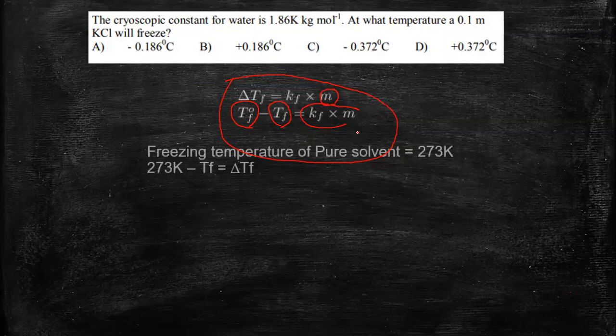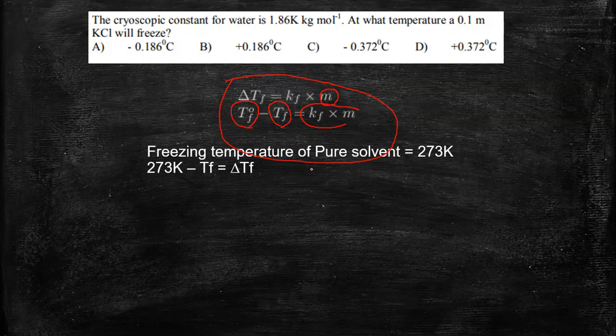Now let's continue. We know the freezing temperature of the pure solvent. Considering it as water, we know the pure solvent, it is 273 Kelvin. So now let's substitute over here for delta Tf. It should be 273 Kelvin minus Tf. So the question is to find this Tf over here. So we have delta Tf is equal to 273 Kelvin minus Tf.